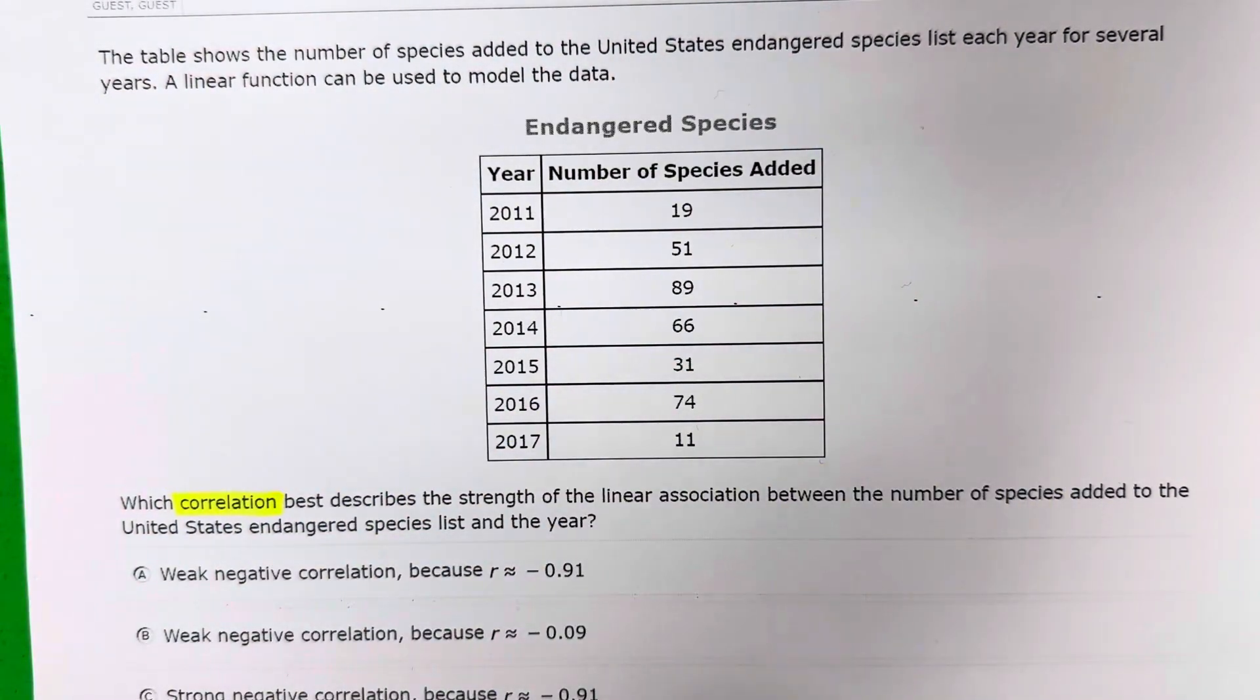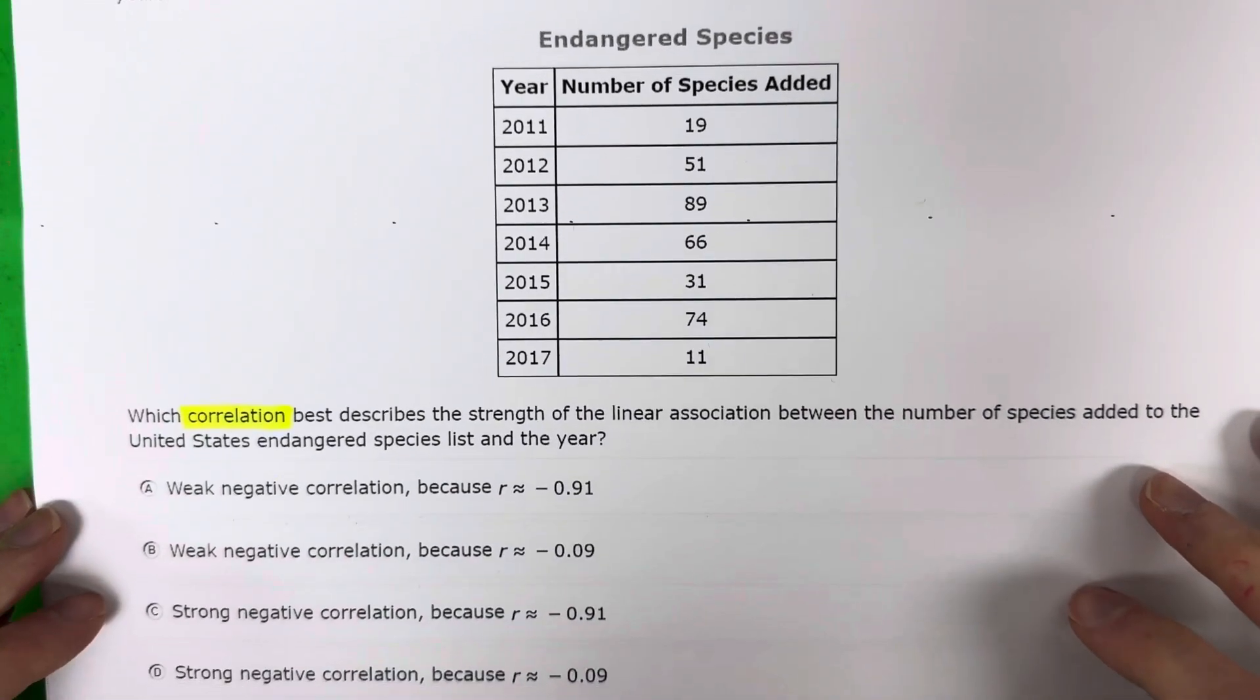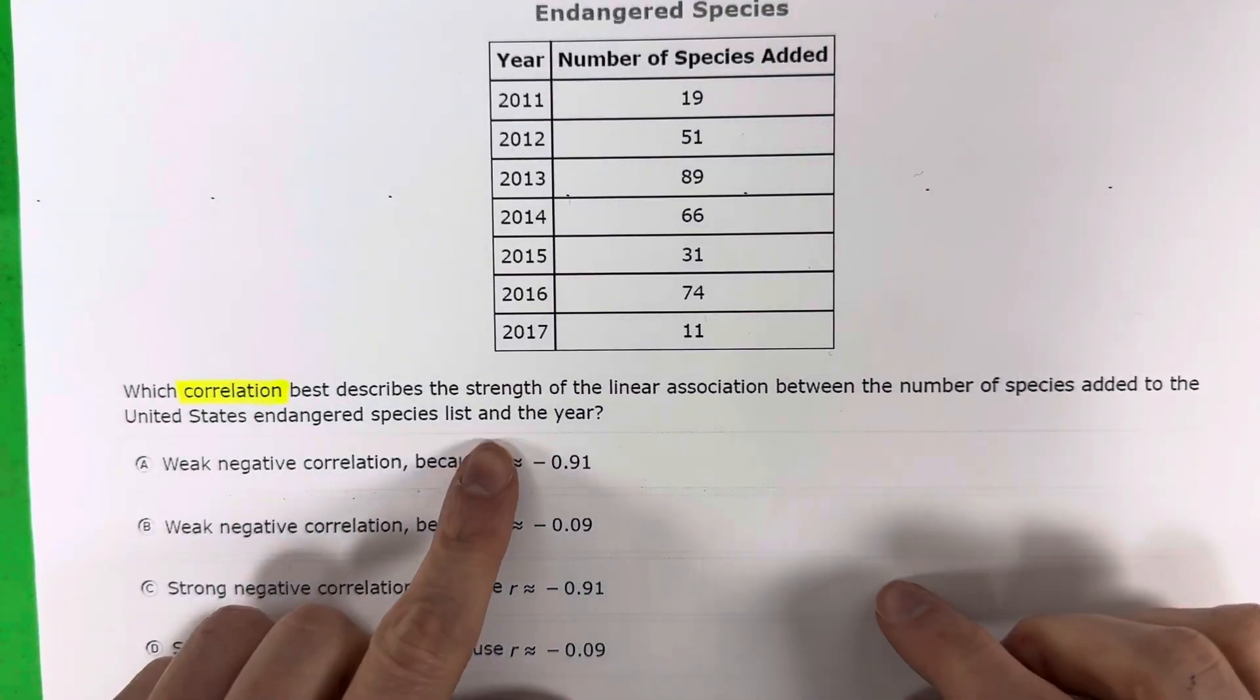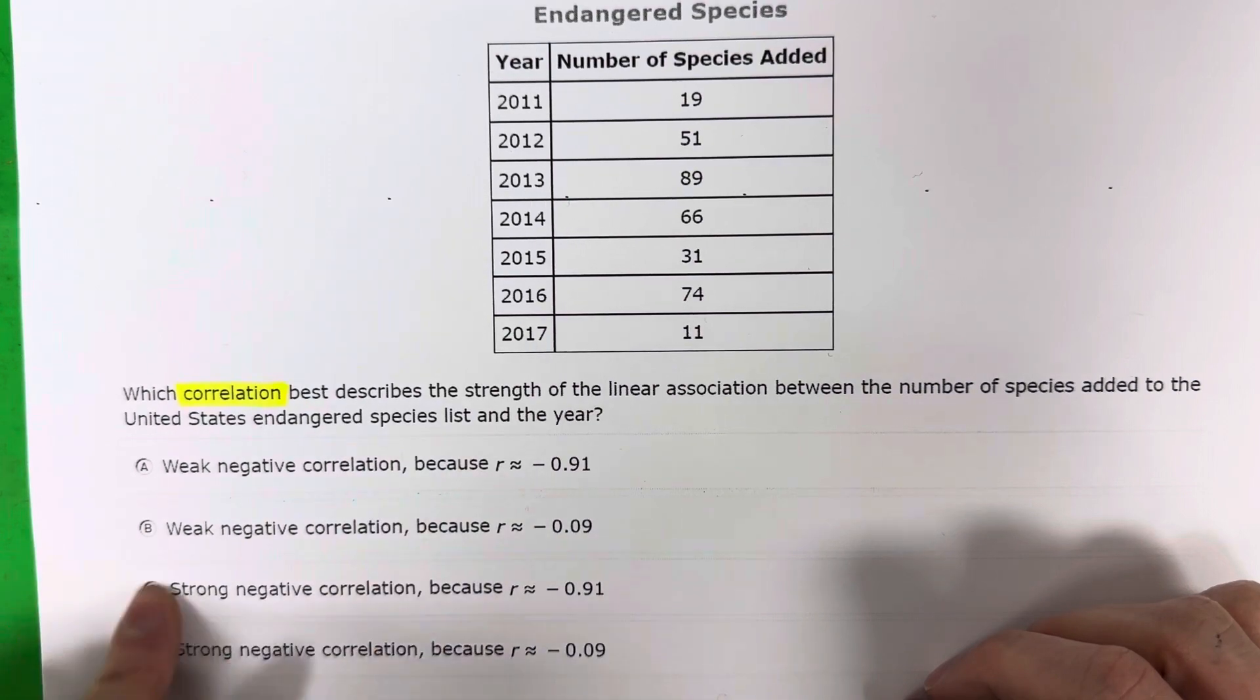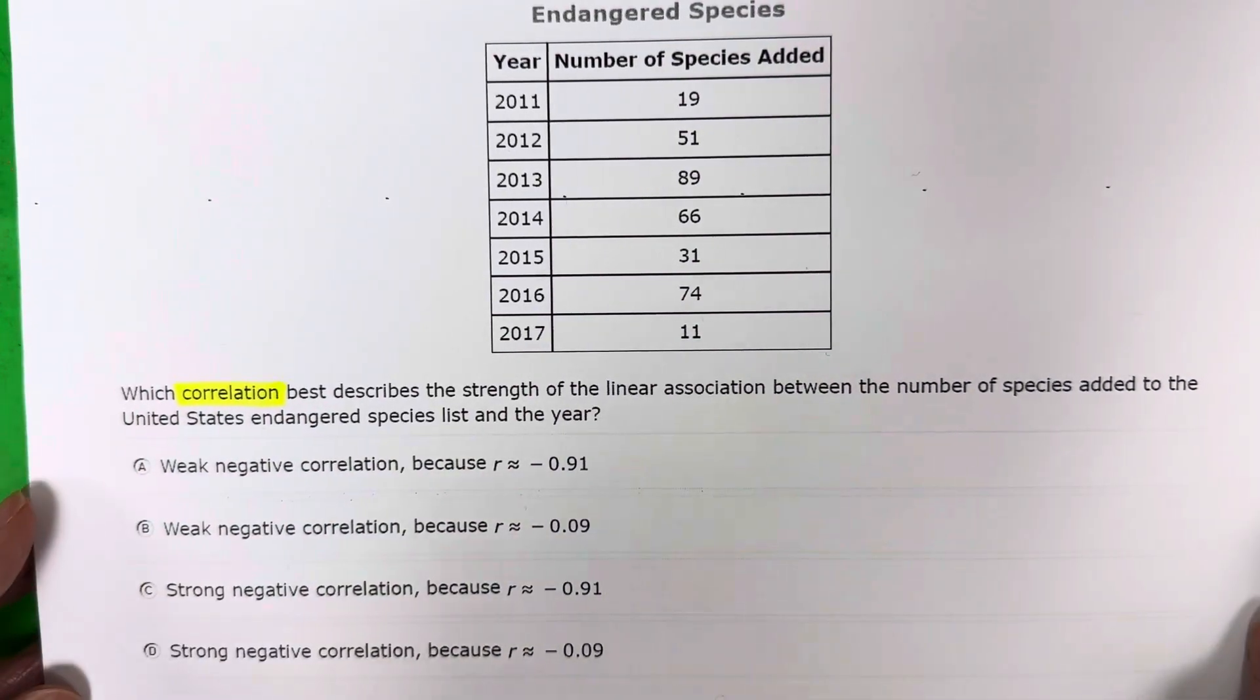And if we take a look at the answer choices, the ABCs, it looks like I need to give the R, which is the correlation coefficient, which I can find using the calculator. I will show you how to do that in a moment. And then we need to decide what type of correlation it is.